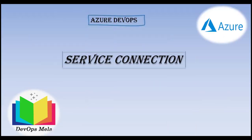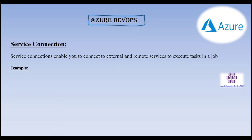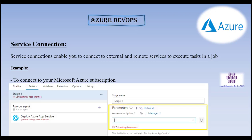Hello everyone. In this session we'll talk about Azure DevOps service connections. We'll understand what exactly a service connection is, see a few examples, then create a service connection by automation and manually. A service connection enables you to connect to external and remote services to execute tasks in a job. For example, if you want to connect to Azure cloud, you need to set up an Azure subscription service connection.